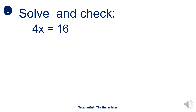Instead of multiplying, I'll divide both sides of the equation by 4 because I'll undo the process. So 4x divided by 4 will give us x is equal to 4.